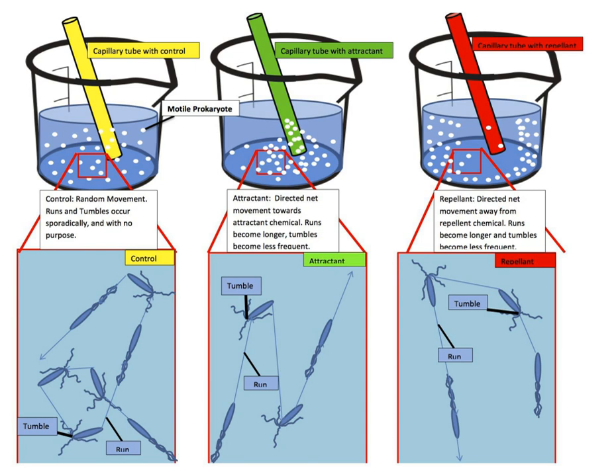Chemotaxis refers to the directional migration of cells in response to chemical gradients. Several variations of chemical-induced migration exist.